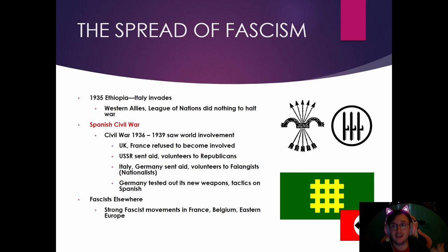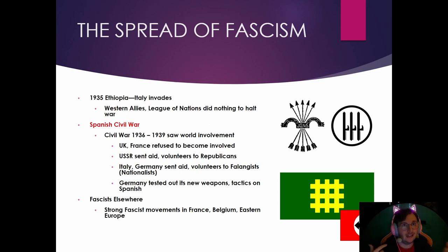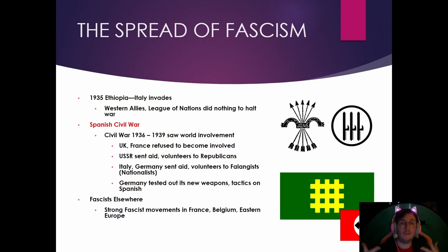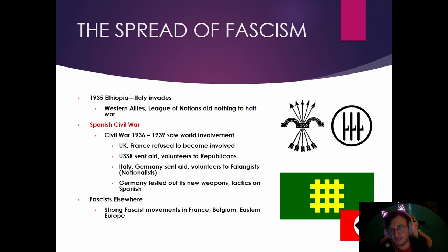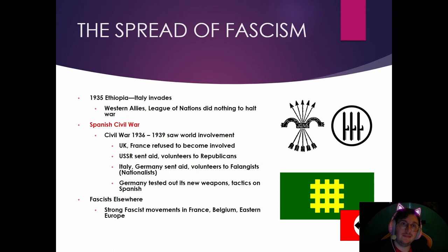Before World War II really kicked off, Italy invaded Ethiopia. Ethiopia had been largely undefeated but it went badly for them, as they were armed with older technology like muskets, some rifles, and limited artillery. The Western allies were in the throes of the Great Depression and did nothing. Italy threatened to leave the League of Nations if tried, so Ethiopia was left out in the rain.